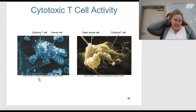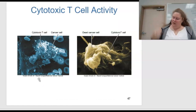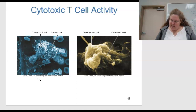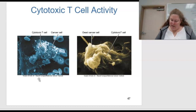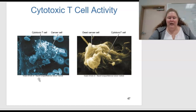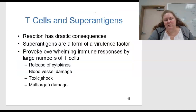Figure 15.11 shows cytotoxic T cell activity. On the left, T cells recognize and bind to cancer cells, then perforate them with many small holes. The cancer cells collapse and die by apoptosis or programmed cell death. The T cell remains alive and active and can be reused.